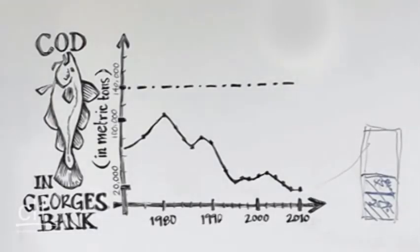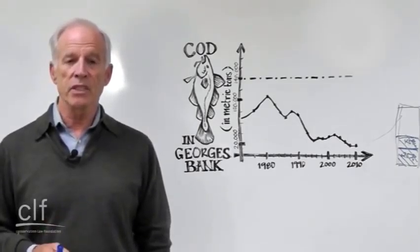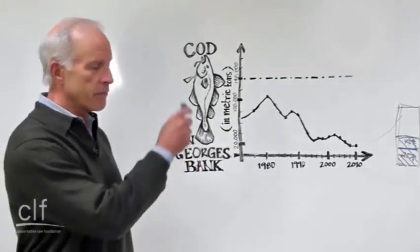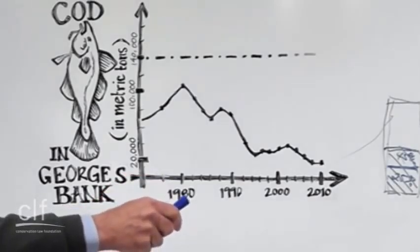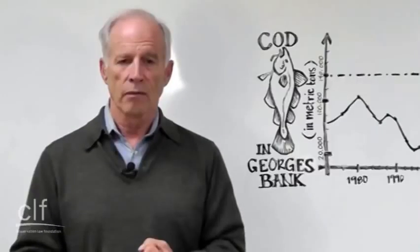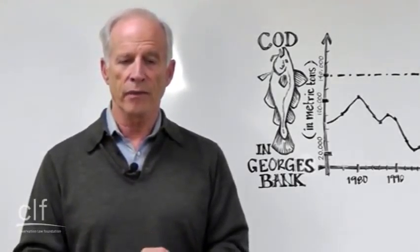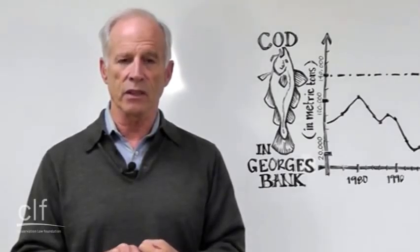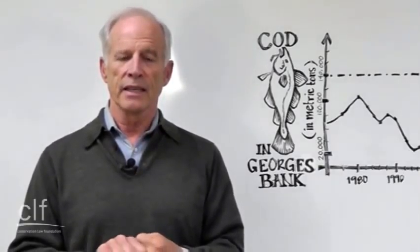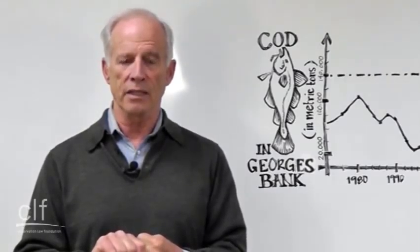But as bad as this is, as urgent as the problem is, as devastating it would be if that line continued to completely collapse, there are some things we could do. It's not inevitable. First, stop fishing on cod. There are not enough cod fish left. Every single cod left in the ocean is needed to reproduce and grow that cod stock back.